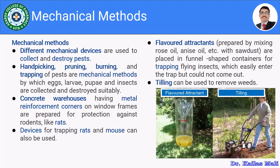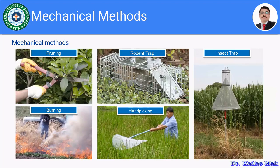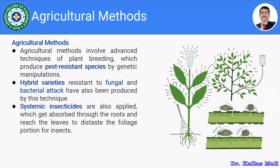This is about the mechanical method. Let us move towards the agricultural method. There is innovation and modernization in the farm with new technology, and we have yet another option to control the pest — that is the agricultural method. The agricultural method involves the advanced technique of plant breeding, which produces pest-resistant plants by genetic manipulation. We are changing the genetic makeup of the plant, and the plant obtained is resistant towards the particular pest, and the pests are managed well.